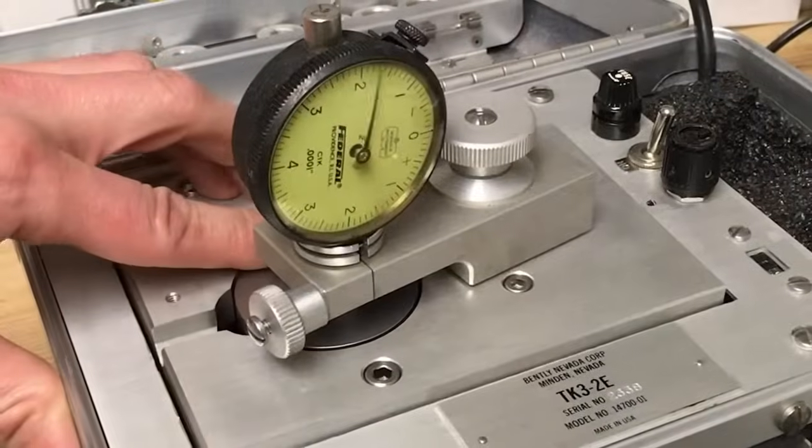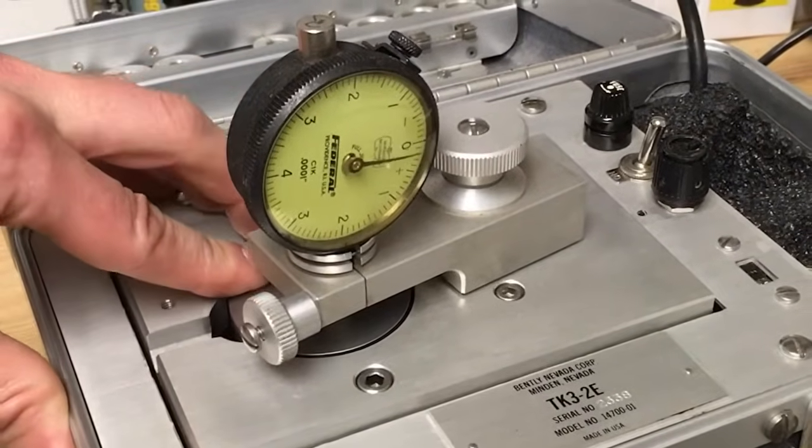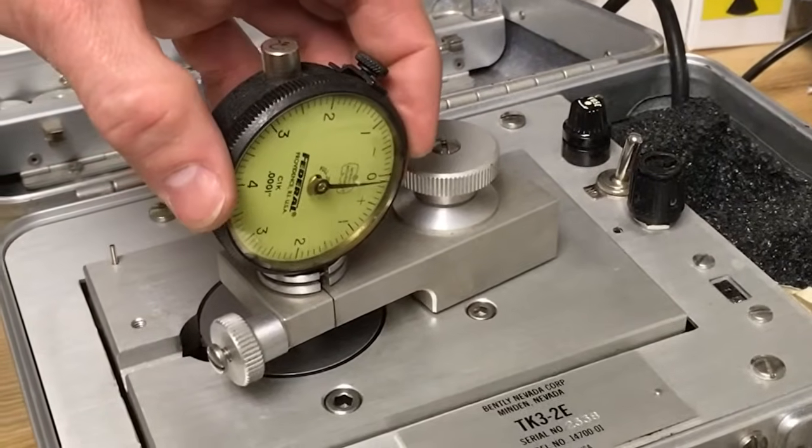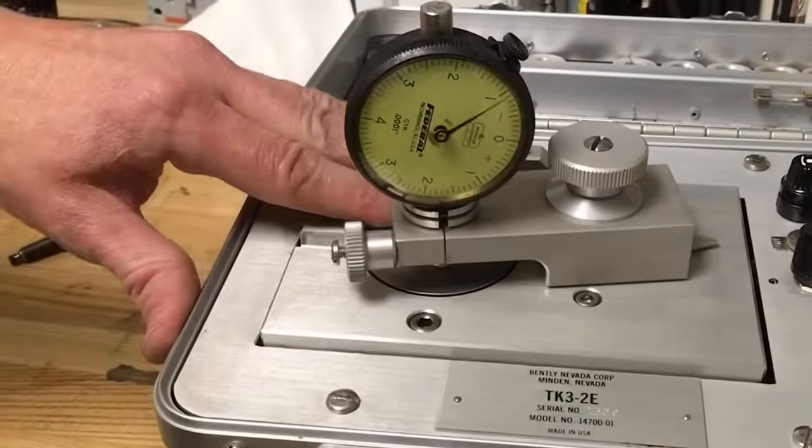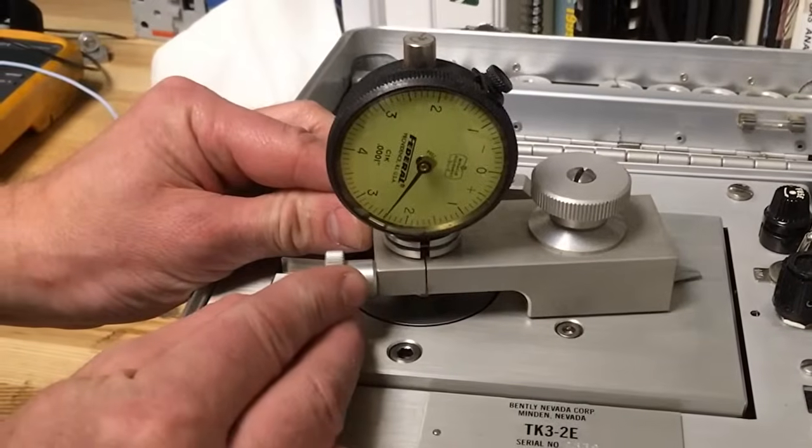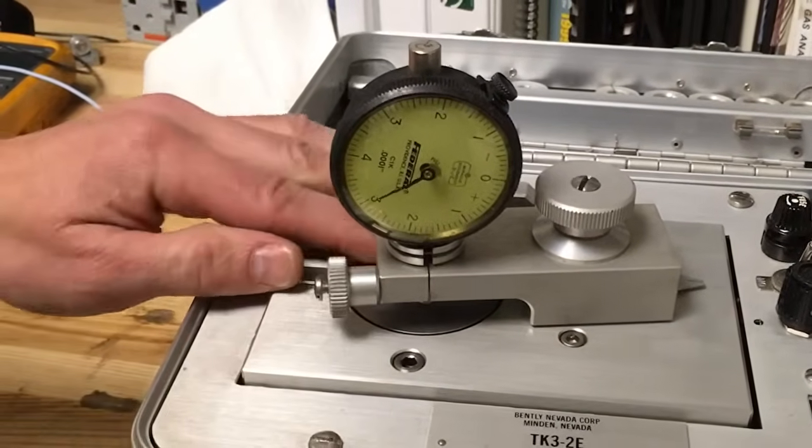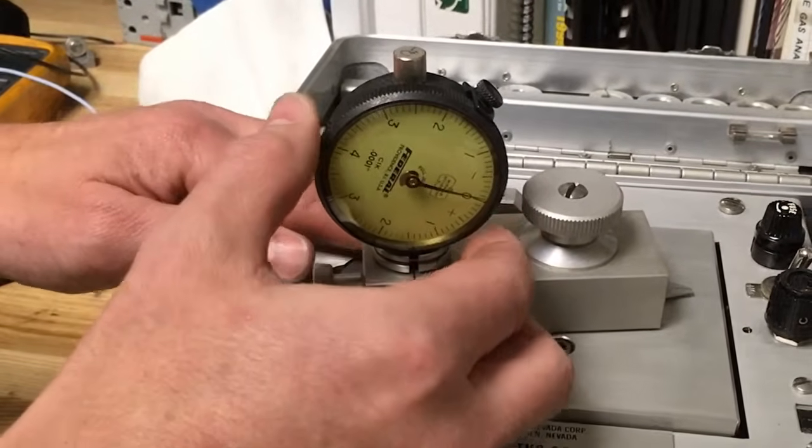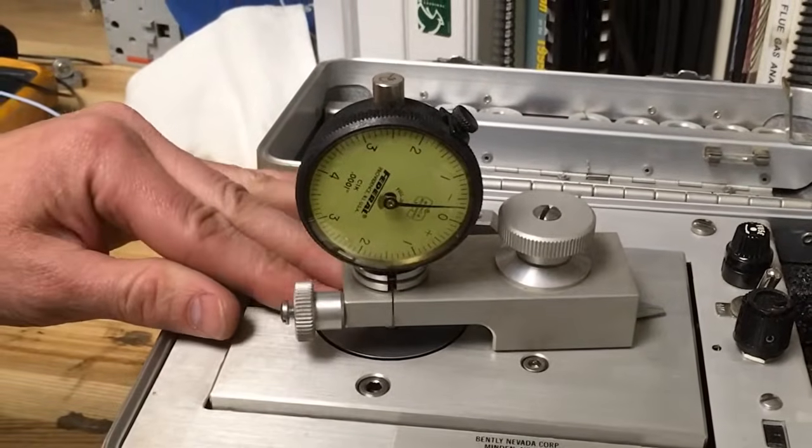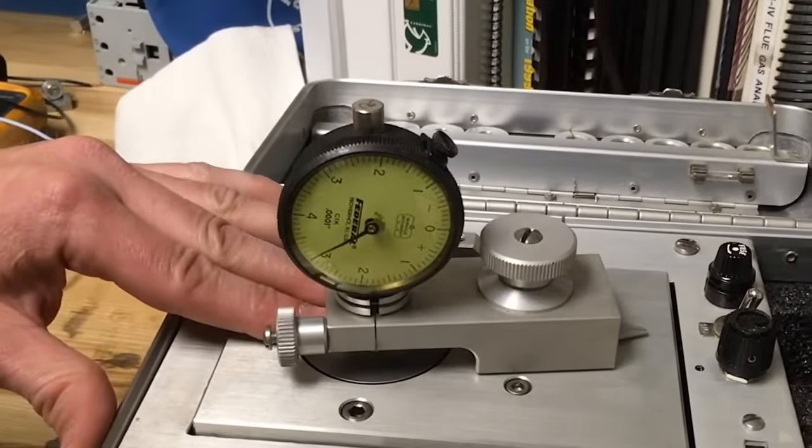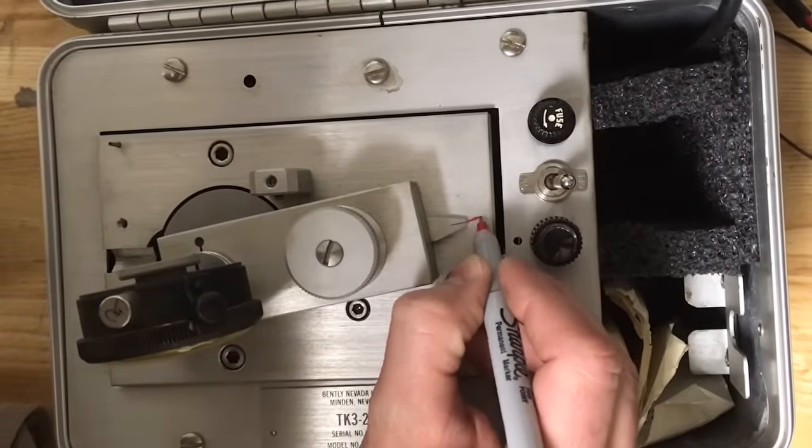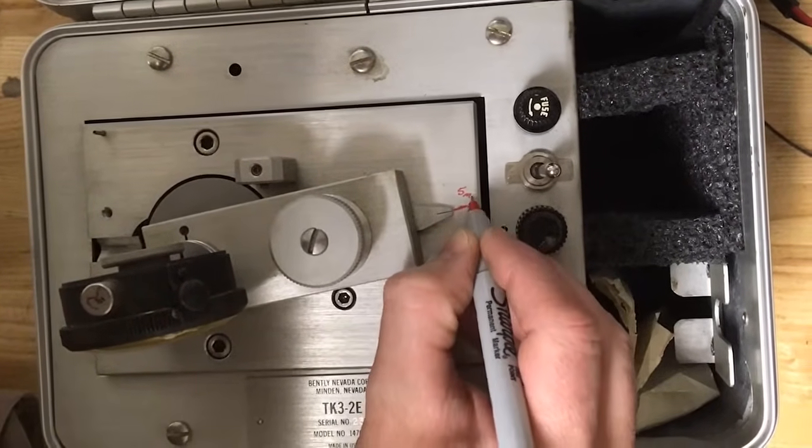Rotate the disc by hand until you find the highest point of measurement. Zero the dial out at this point, then rotate the disc one full revolution, taking note of the total measured oscillation. Use the swing arm to adjust the total oscillation until exactly five thousandths of an inch is measured in total travel. Once you have achieved exactly five thousandths of an inch, it is generally a good idea to mark this spot using a marker.